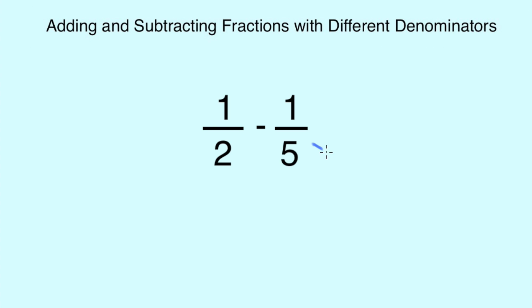I can do this by multiplying each fraction by the opposite denominator. So 5 times 2, and whatever I do at the bottom, I do at the top. Then I multiply the 2 by 5, and again, I do this to the numerator.